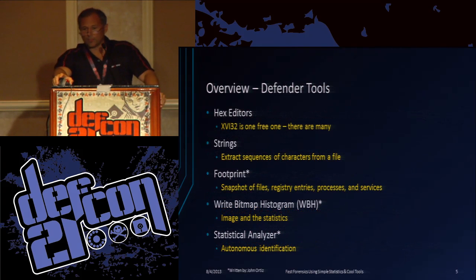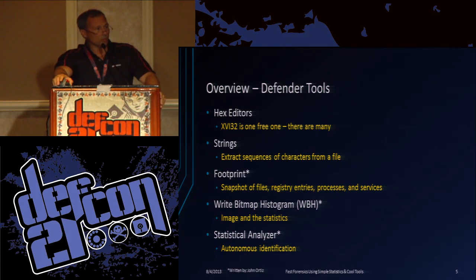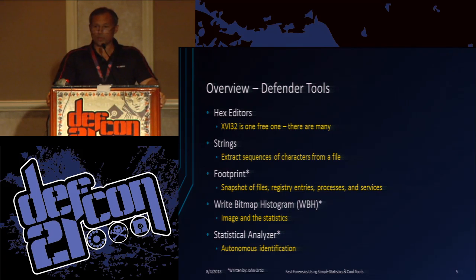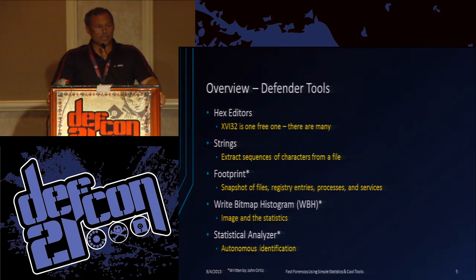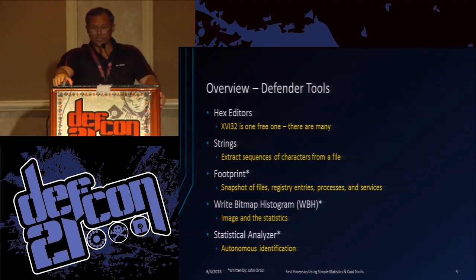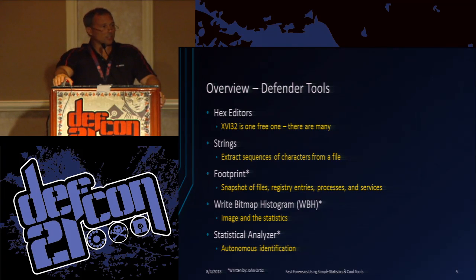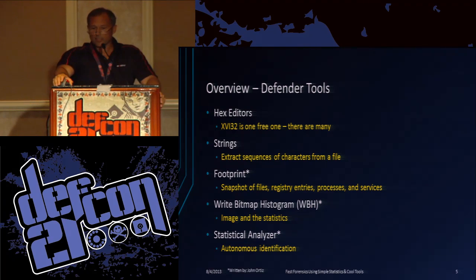Defenders have hex editors and strings. Footprint is one of my tools I wrote that helps identify what malware did to your system. It takes a snapshot of files, registry keys, processes and services, and then you can take a later snapshot and compare them. Right bitmap histogram — which is a terrible title but I can't think of anything else to call it — takes an image of a file and also takes some basic statistics. You can learn a lot from just a few basic statistics. The statistical analyzer combines the two and automates them.